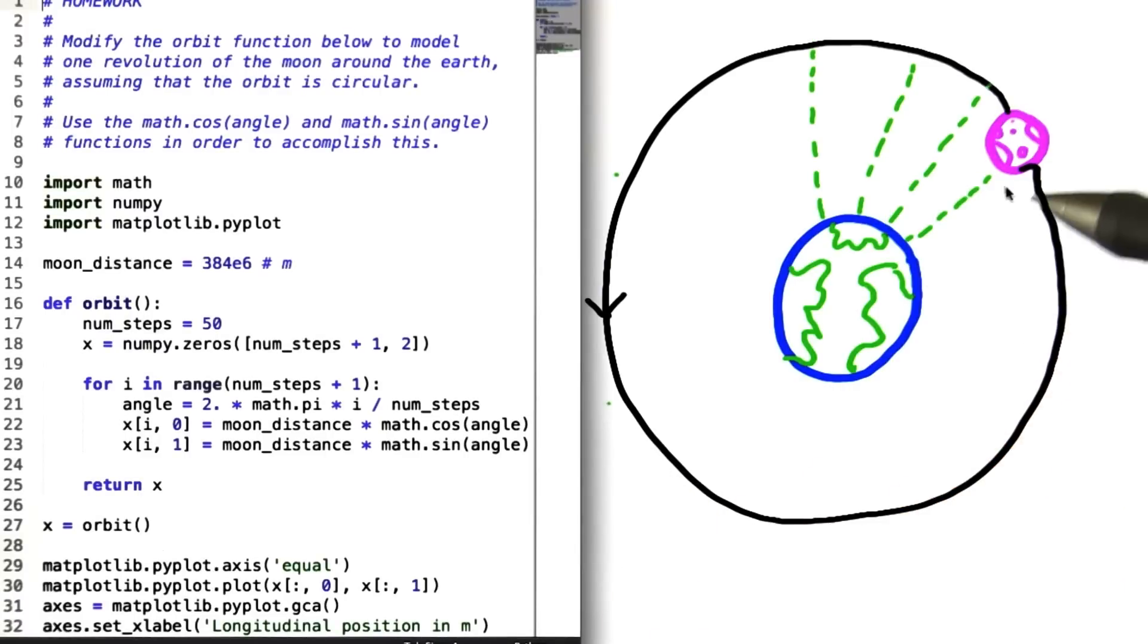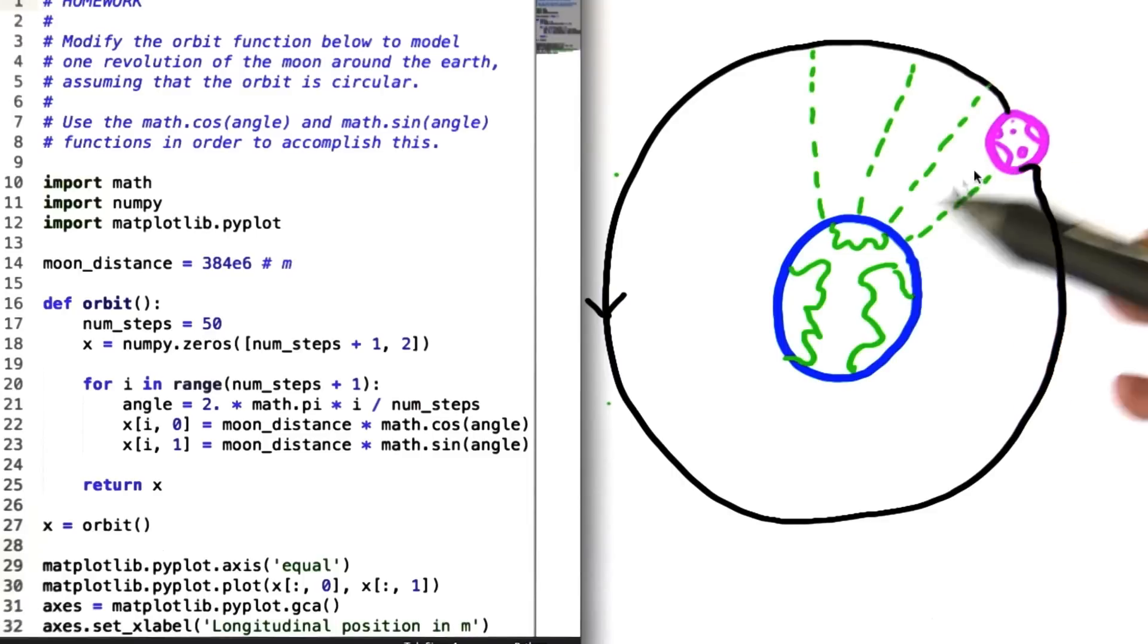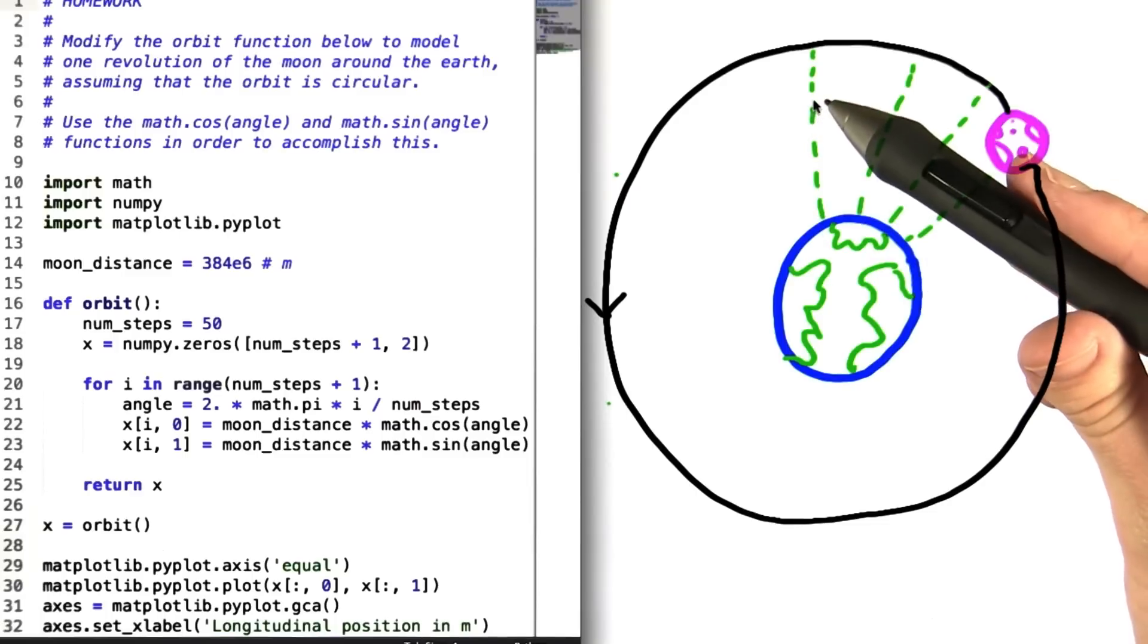Now if we look over at this picture, you can sort of see what's happening. The moon starts in this position, then after one time step is moved to this position, and so on and so forth. The number of segments will equal the number of steps, and the number of lines will equal the number of steps plus 1.